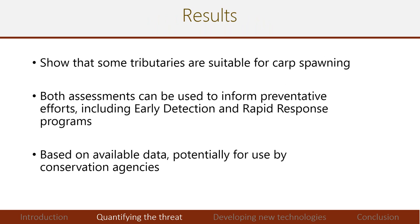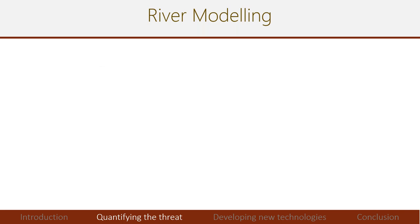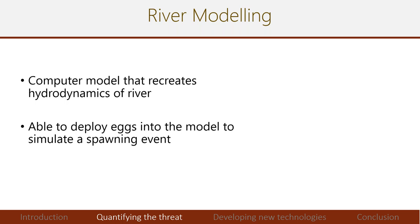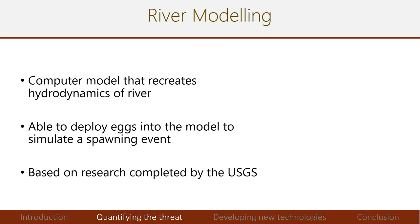Both assessments show tributaries in the Toronto area and across the Canadian Great Lakes Basin that are suitable for carp spawning, and these can be used for preventative efforts including early detection and rapid response programs by Fisheries and Oceans Canada. The next step is looking at how carp spawning success changes in different flow scenarios using river modeling — a computer model that recreates the hydrodynamics of a river, allowing eggs to be simulated through a spawning event. This work is based on USGS research and is being conducted collaboratively with them.